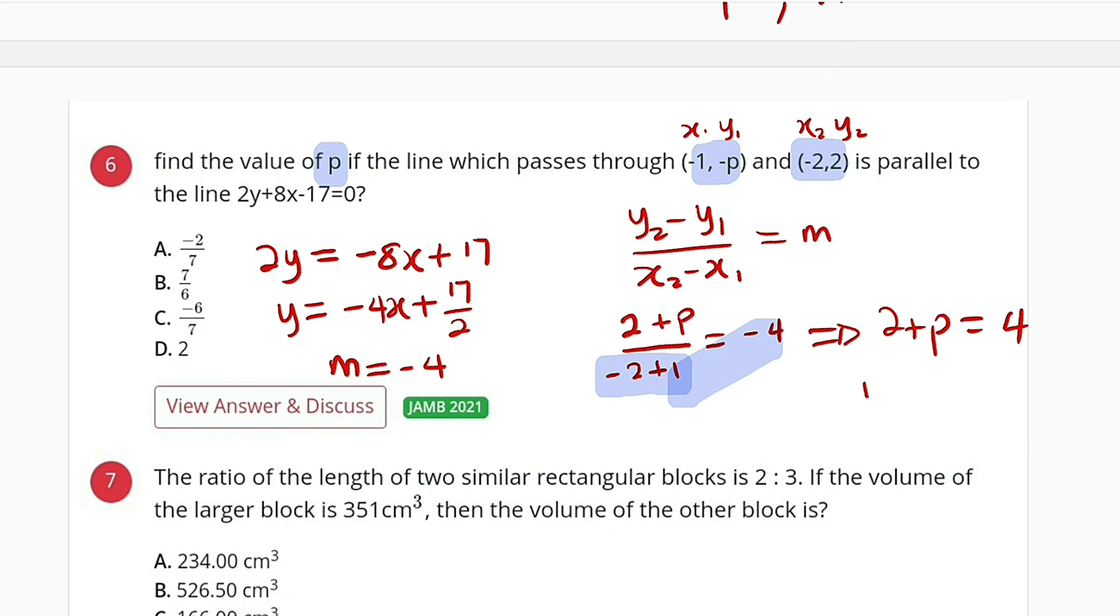You take 2 to the right, we have p equal to 4 minus 2. And finally, p is equal to 2. And from the options, we have it as D.